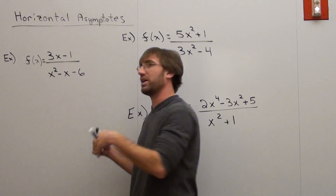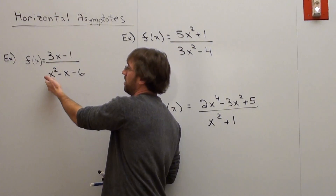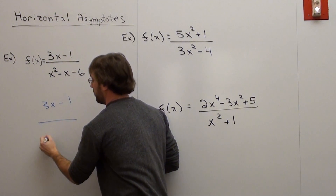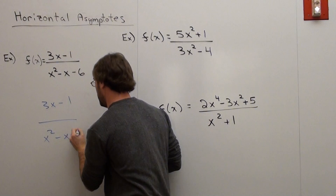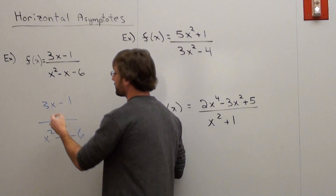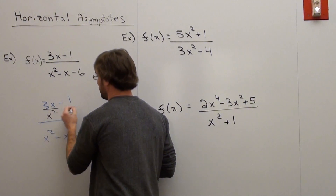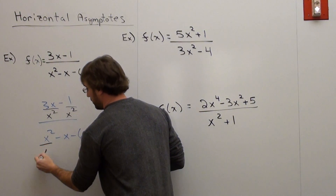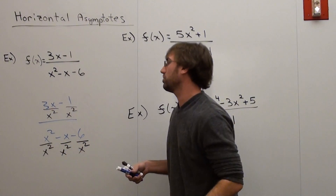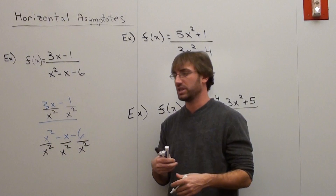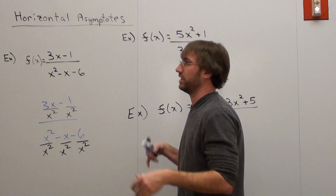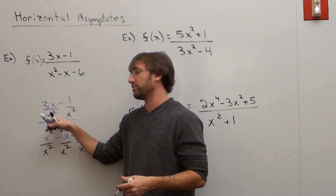For an explanation: all you really do is divide each term by the highest degree. The highest degree in this problem is x squared. So we have 3x minus 1 over x squared minus x minus 6. Divide each term by x squared. You then suppose that x approaches infinity — or negative infinity, for that matter.